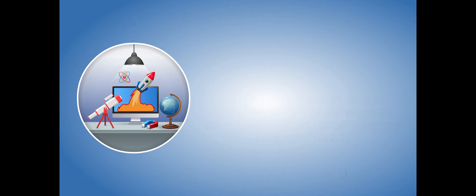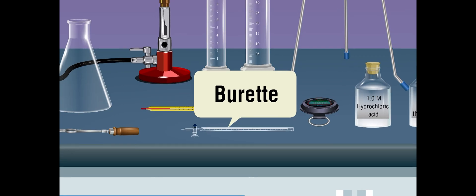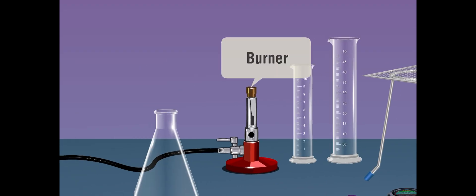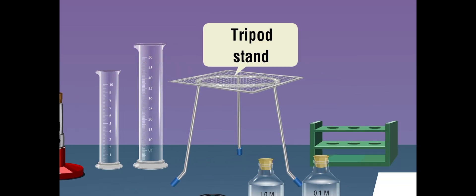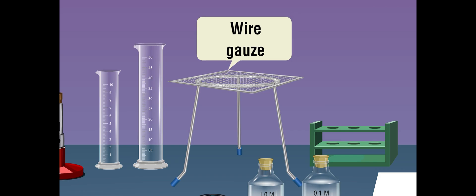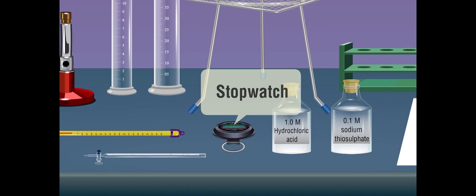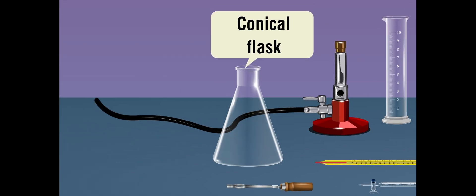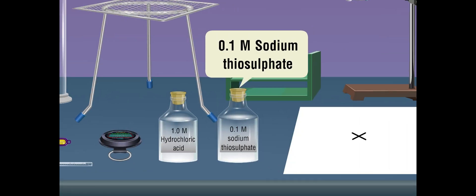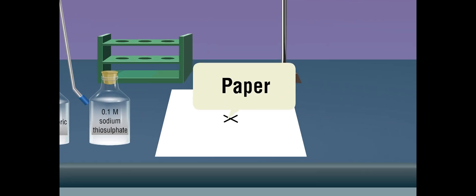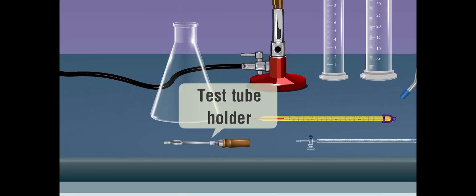Materials required: burette, burette stand, burner, tripod stand, wire gauze, measuring cylinders, stopwatch, conical flask, 0.1 molar sodium thiosulphate, 1.0 molar hydrochloric acid, paper with a mark X at the center, and a test tube holder.